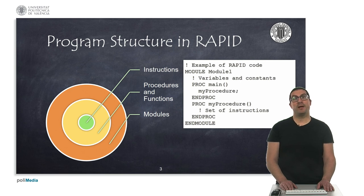Modules can have a set of variables and constants usually defined at the beginning of the module, such as target configurations for robot motion instructions. Some instructions could have been placed directly in the main procedure, although it is advisable to properly organize your code with procedures and functions, so you can get better code readability and organization.